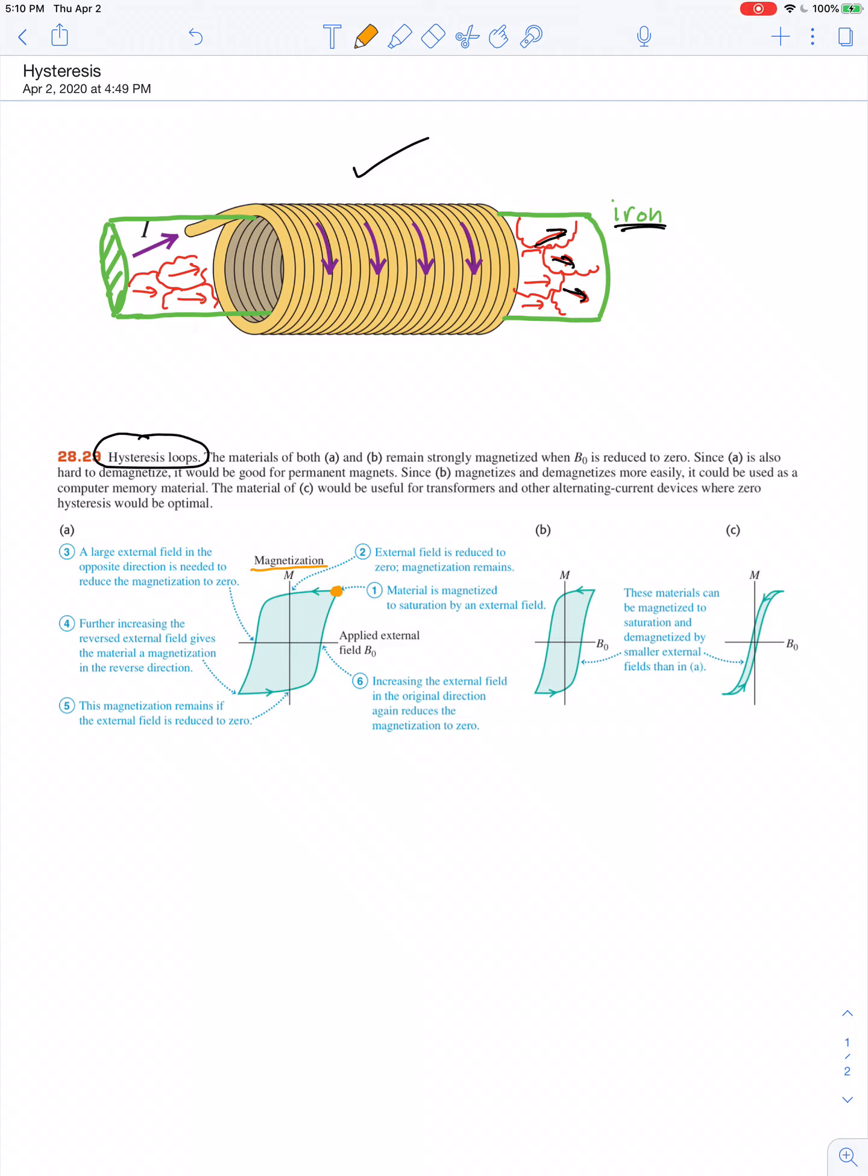To bring the magnetic domains back into random alignment and demagnetize the iron, you don't just bring the external field to zero. That would still maintain some magnetization. You need to reverse the direction of the magnetic field by running current in the opposite direction for a while, and then the magnetization would be brought down to zero.